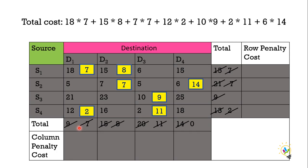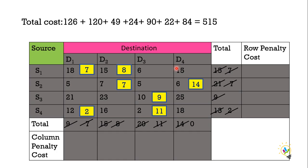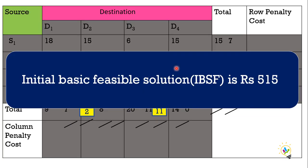Calculate the total cost by multiplying the cost by the allocated material: 18×7 + 15×8 + 7×7 + 12×2 + 10×9 + 2×11 + 6×14. Adding all these together gives 515. This is the initial basic feasible solution (IBFS) — the minimum cost to transport 58 units of material from 4 sources to 4 destinations.